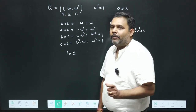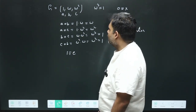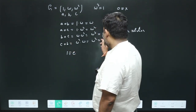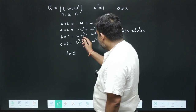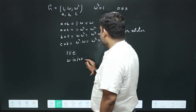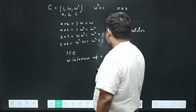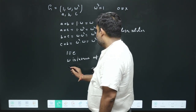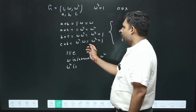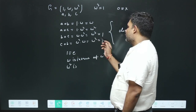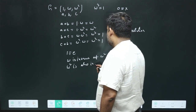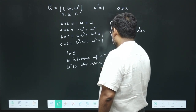Now let's check the inverse. When b operates on c, we get ω·ω² = ω³ = 1, which is the identity. So ω is the inverse of ω². Similarly, ω²·ω = ω³ = 1, so ω² is also the inverse of ω.